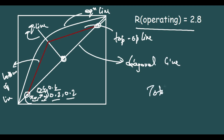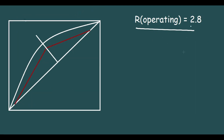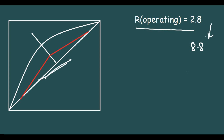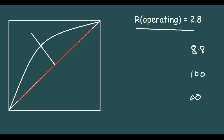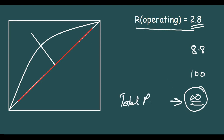In the case of total reflux, something different happens. As I increase R_operating from 2.8 to say 8.8, notice how the operating lines come closer to the diagonal line. As I increase further to 100, they continue to approach it. When I make R equal to infinity, the top operating line and the bottom operating line merge into a single line coinciding with the diagonal. This is total reflux.